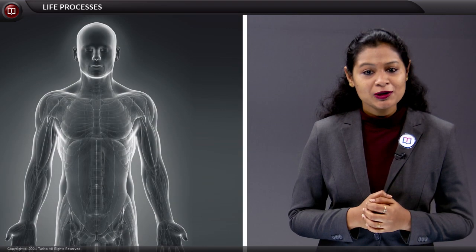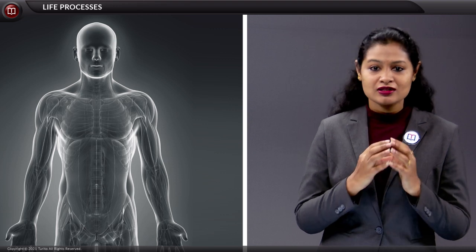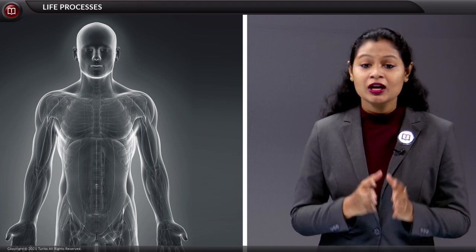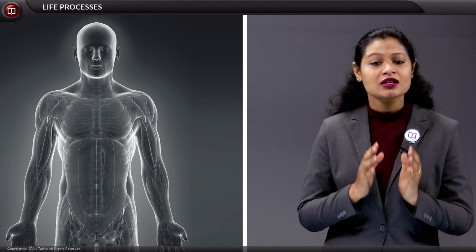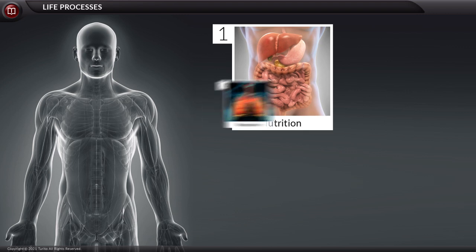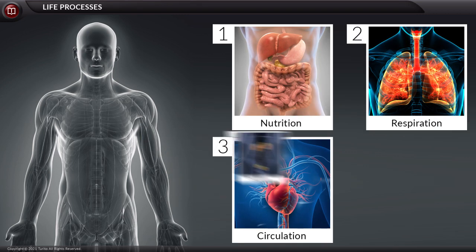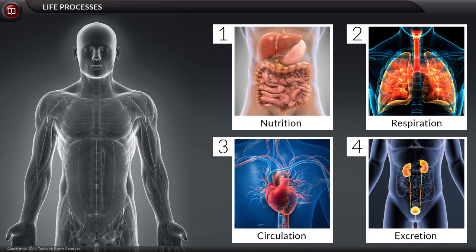There are many processes functioning inside an organism's body, but the most vital ones include nutrition, respiration, circulation, and excretion. These processes are considered the most important and basic functions of a body to maintain life.